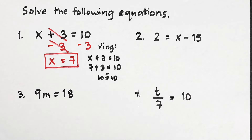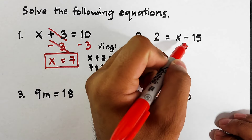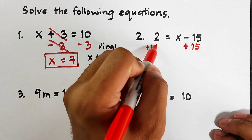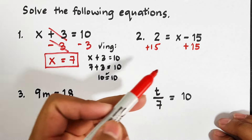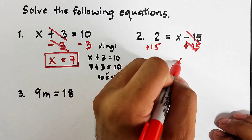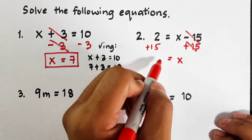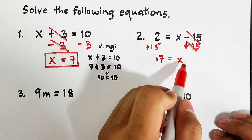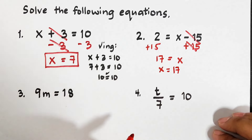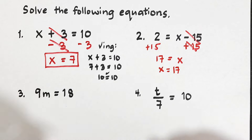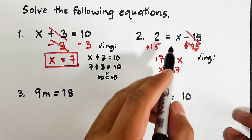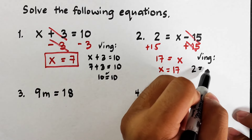Now let's move on to the next equation. We have 2 is equal to x minus 15. The variable x is on the right side of the equation, and we need to isolate it by eliminating minus 15. The inverse of subtraction is addition, so we will add 15 on both sides of the equation. Negative 15 plus 15 equals 0, so what we have now is x is equal to 2 plus 15, which is 17.